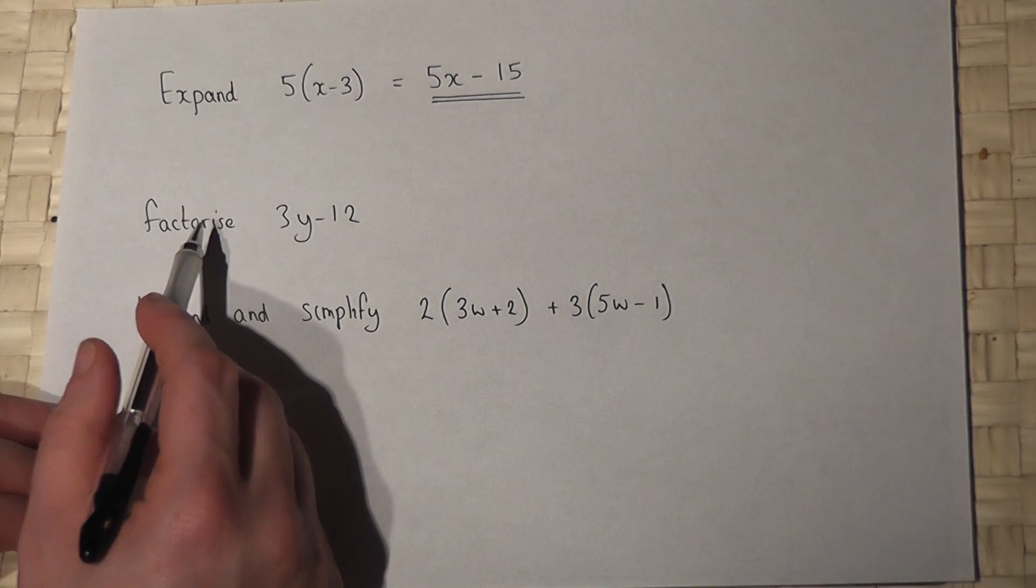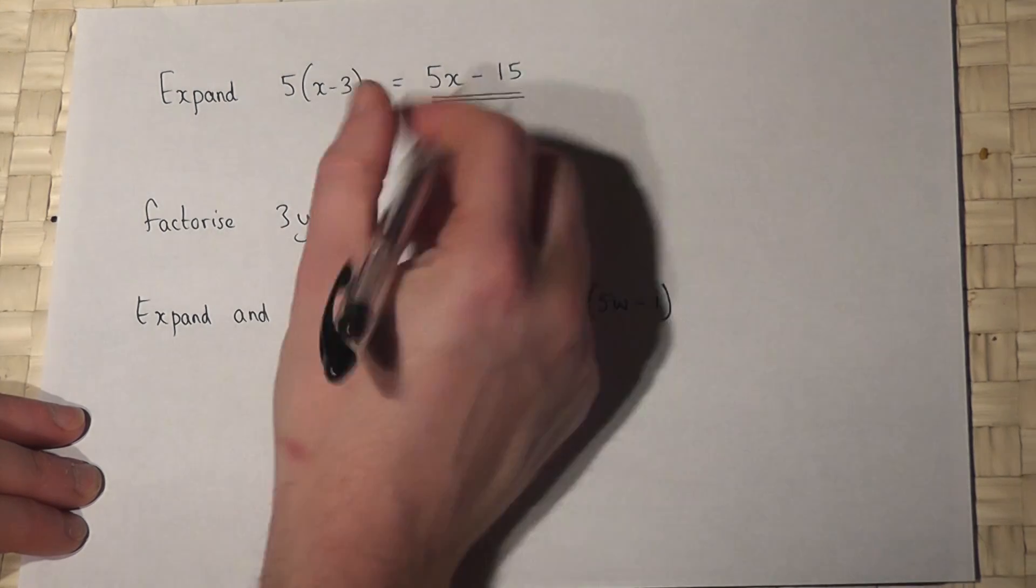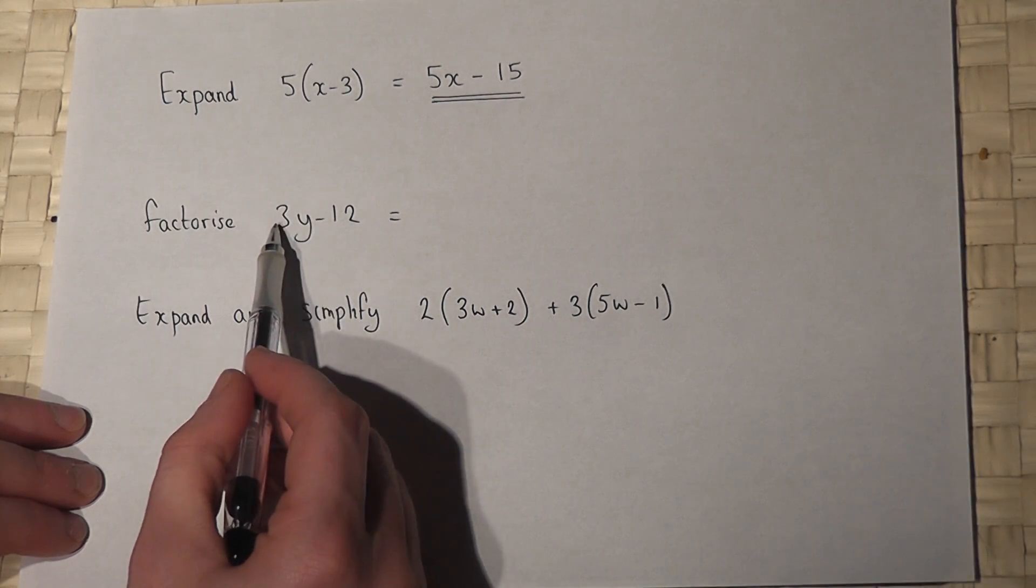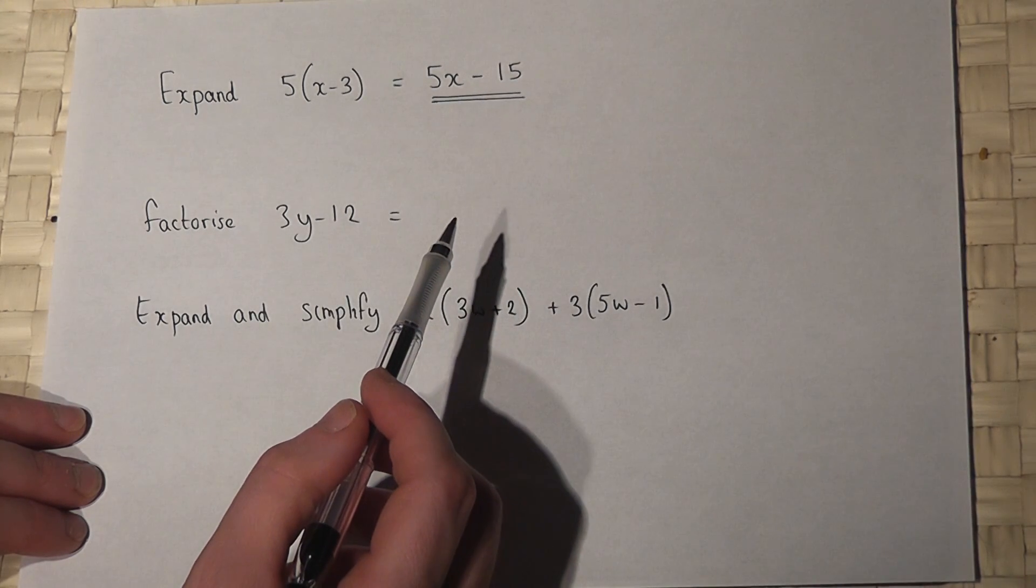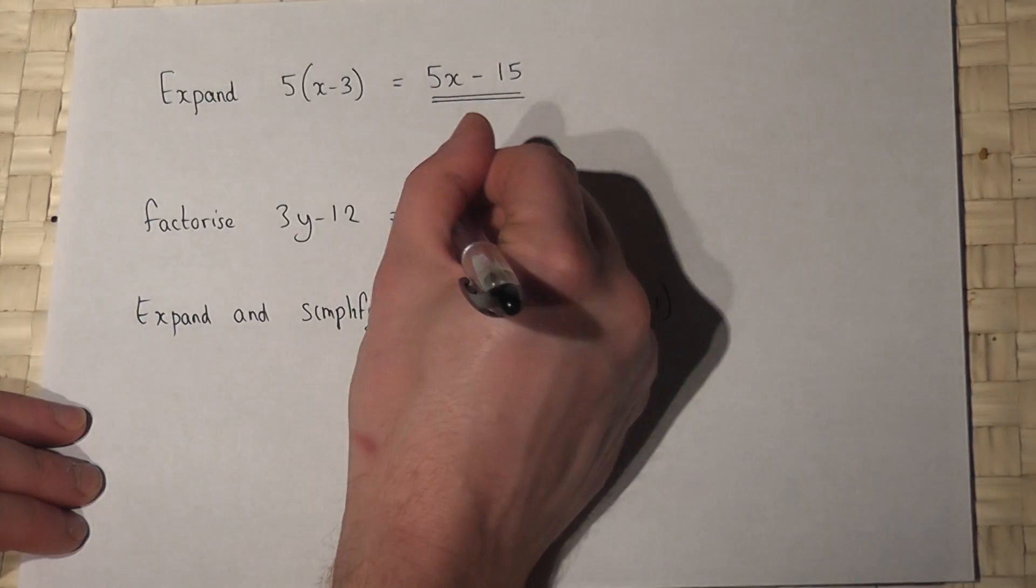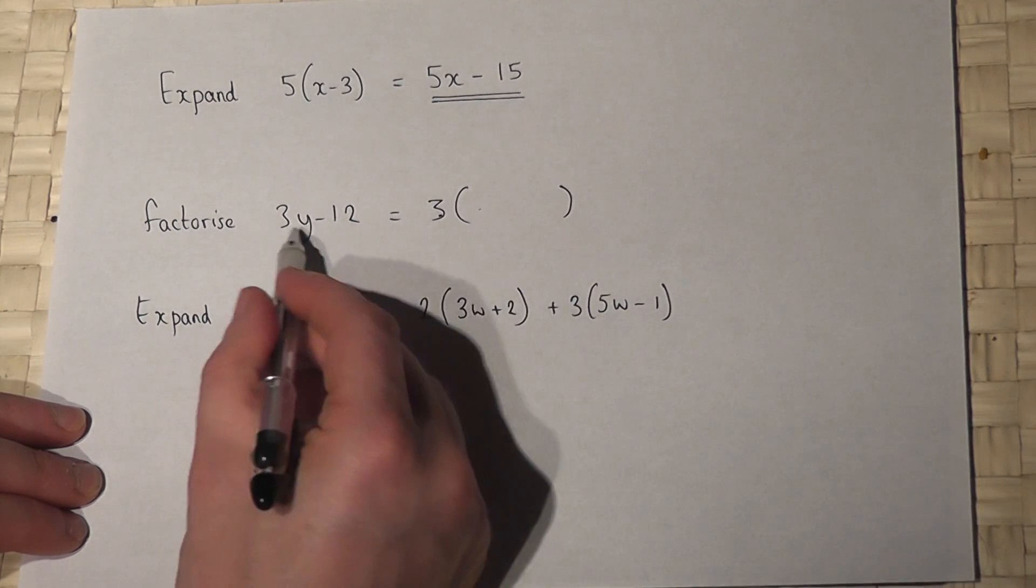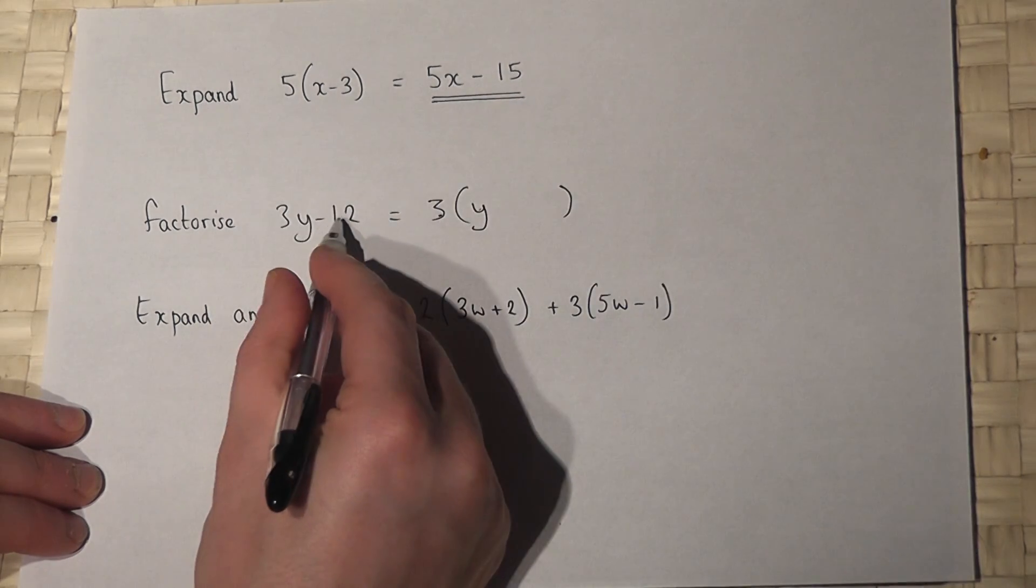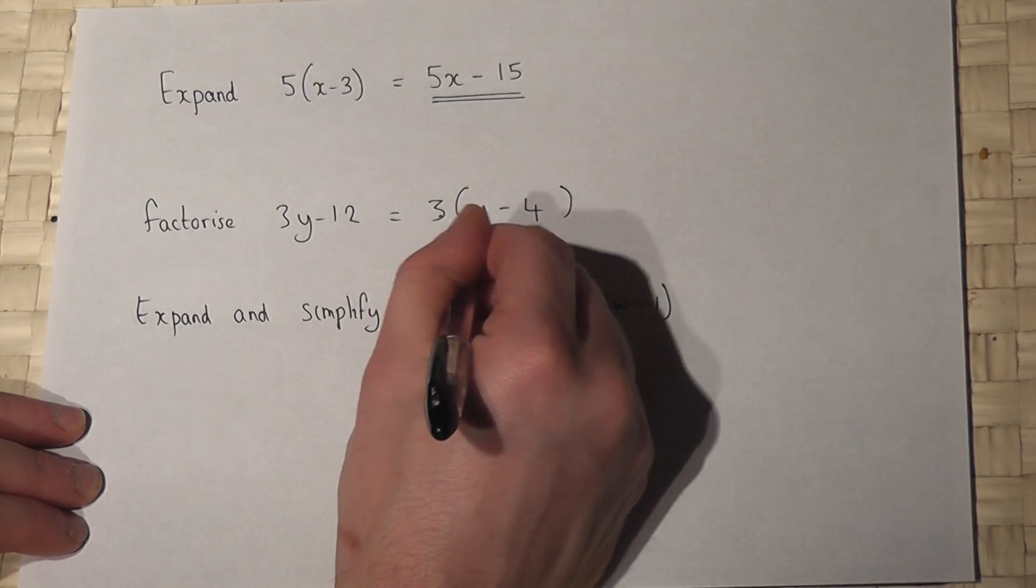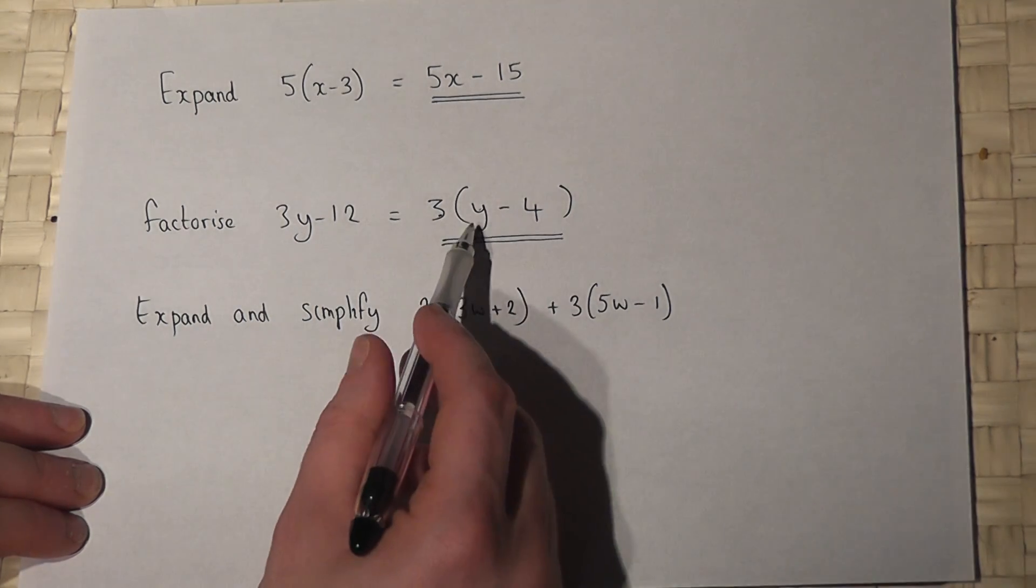Now factorizing is going in reverse. Here's the answer, what was the question? The method here is to think, what is the highest possible common factor of 3 and 12? Well, 3 goes into 3 and also 3 goes into 12, so we put a 3 outside the bracket. 3 times y is 3y, and 3 times 4 is 12. It's negative, so the answer is 3(y - 4).